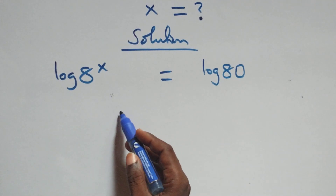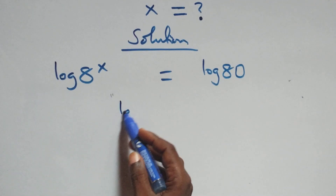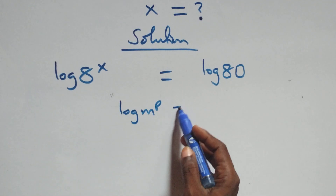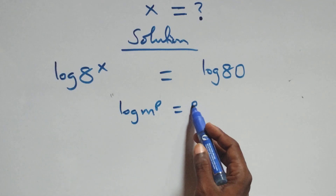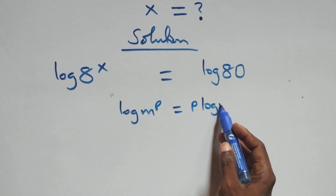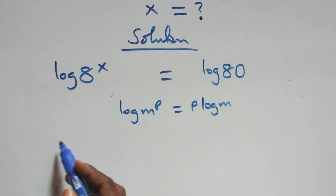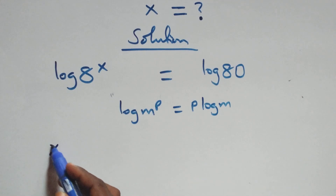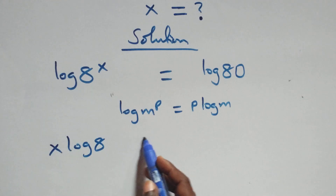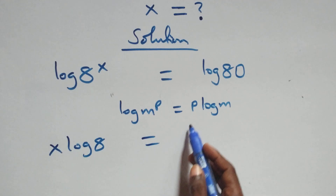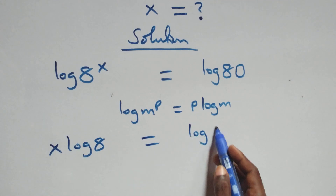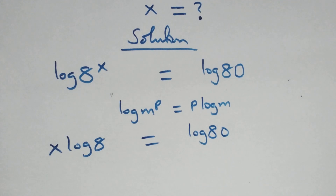Here we apply the power rule of logarithms. We have log n raised to power p, which is the same thing as p·log n. So here we have x·log 8 equals to log 80.